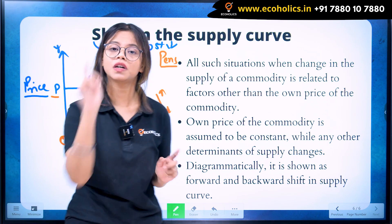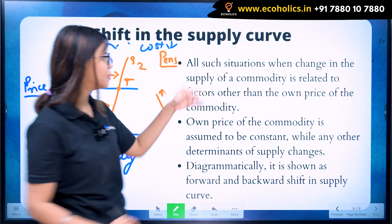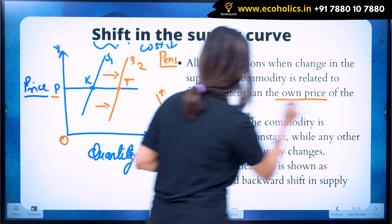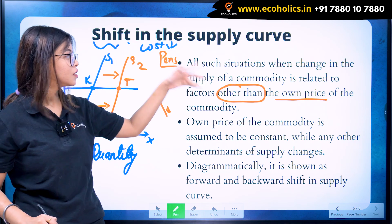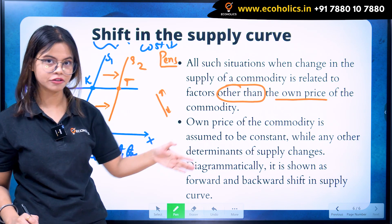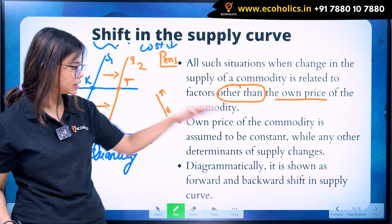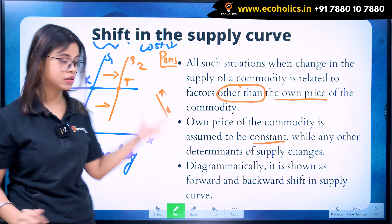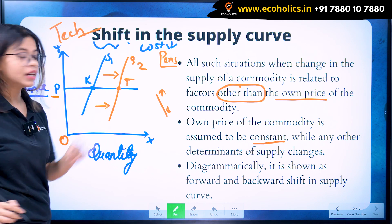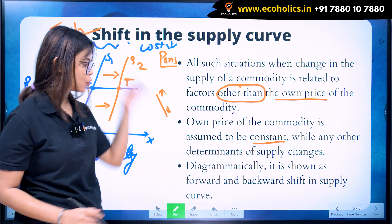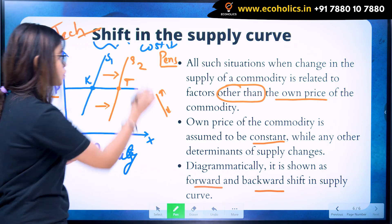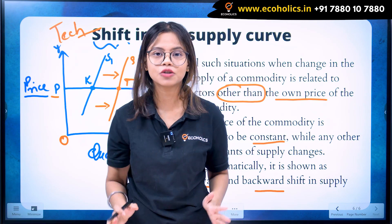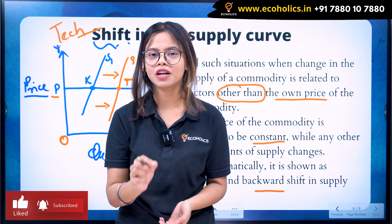Shift happens due to any number of reasons, but not the own price of the commodity. The shift in the supply curve refers to all such situations when change in the supply of a commodity is related to factors other than the own price of the commodity. The own price of the commodity is assumed to be constant, while any other determinant of supply changes — here, we have taken technology. It is shown as the forward and backward shift in the supply curve. So, movement and shift — that is what the movement and shift in the supply curve means. I hope this video is clear to all of you. Please like, share, comment, and subscribe to our channel, Ecaholics. Thank you.